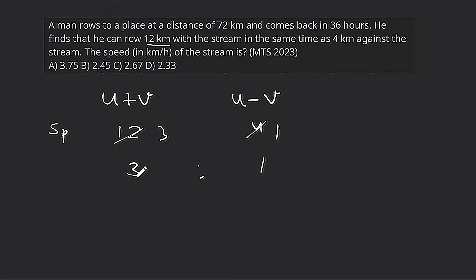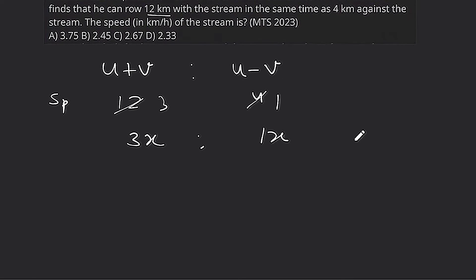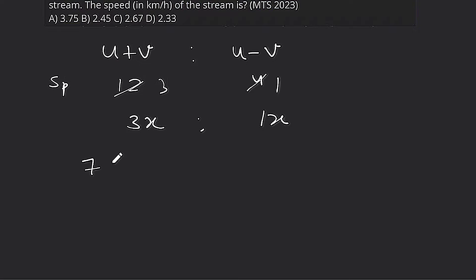So let u+b = 3x and u-b = x. The total distance is 72 km each way, and we need to use these expressions to set up our time equation.